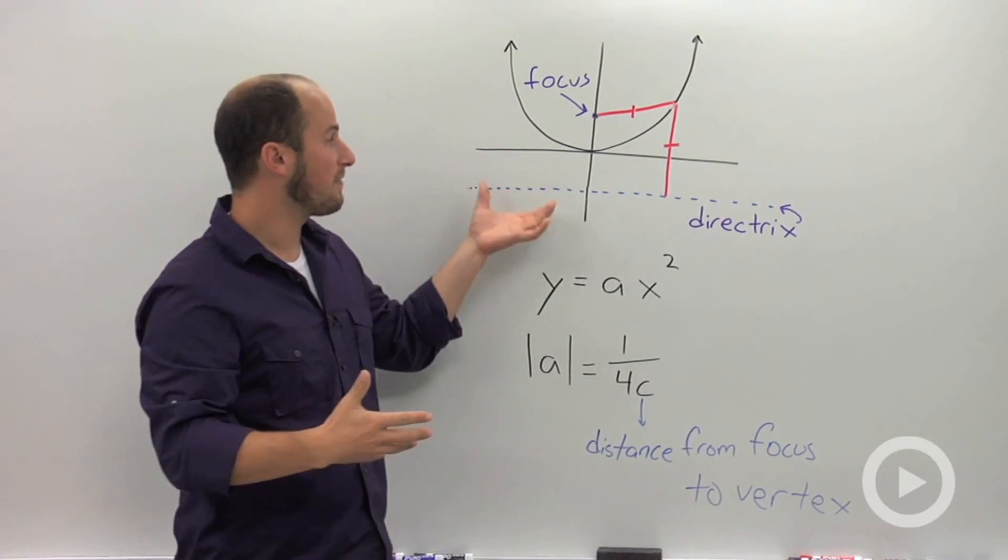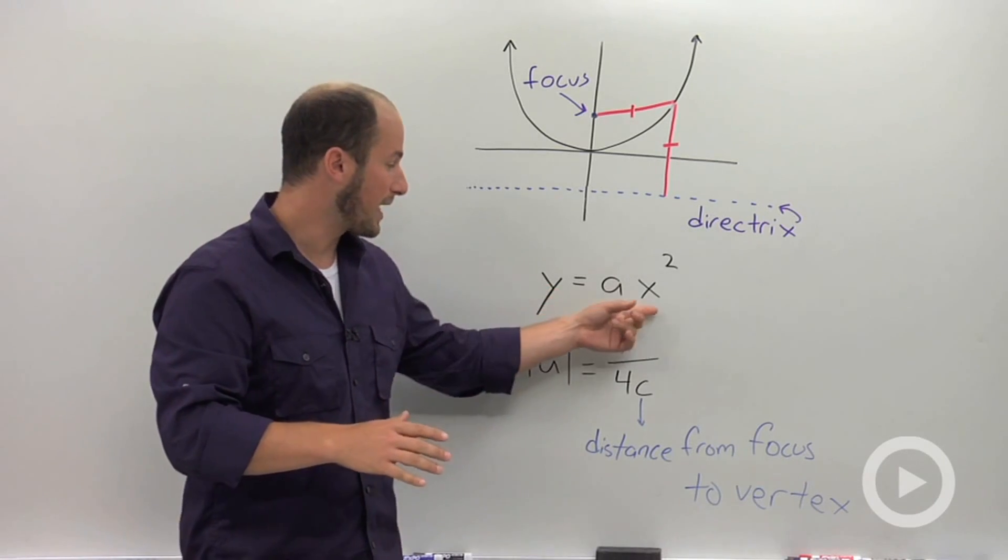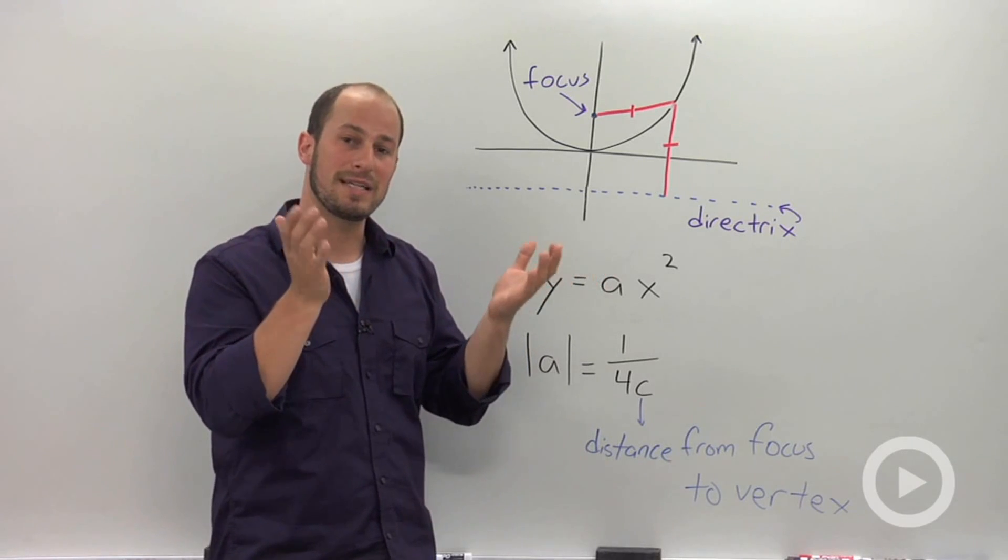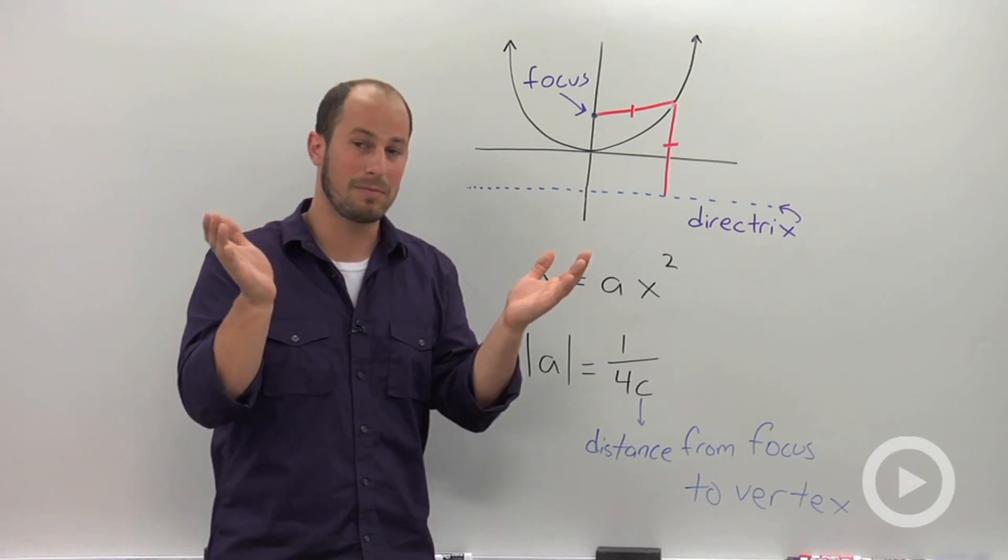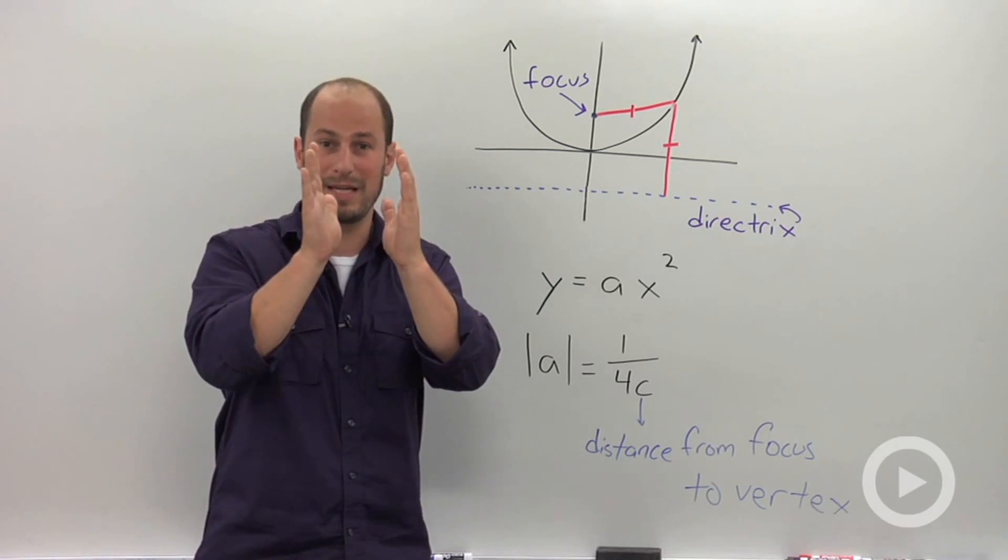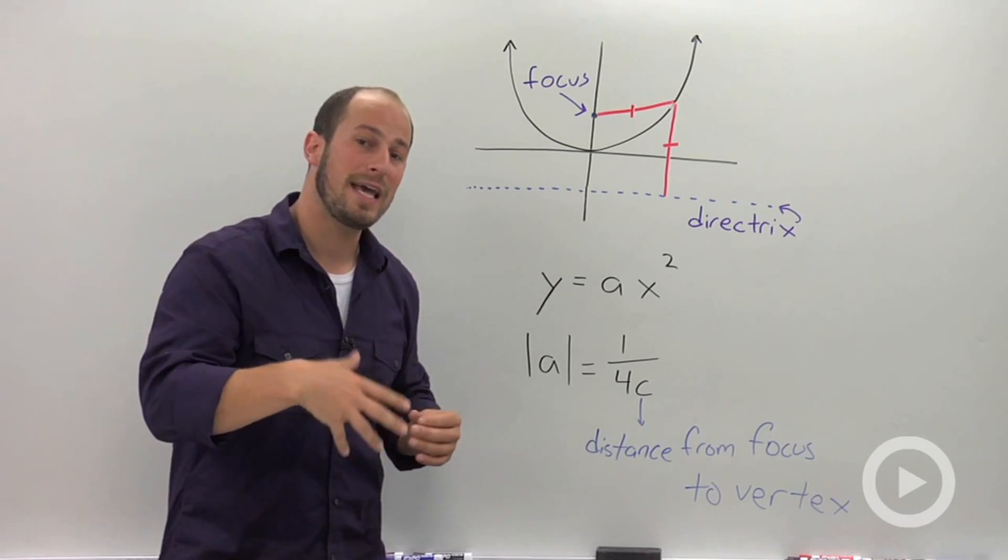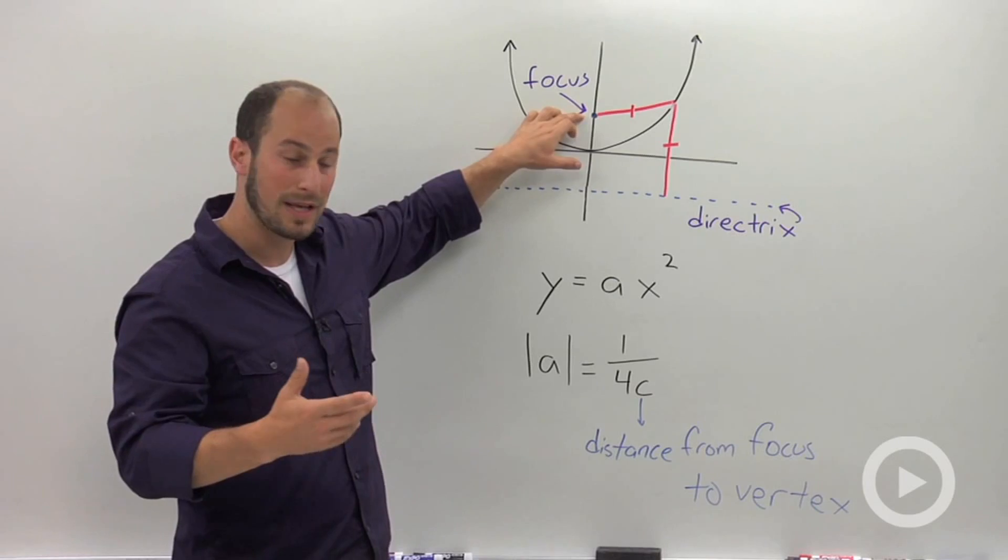So this parabola that I have up here is just a basic parabola, y = ax squared, where a is positive because we have an upward-facing parabola. What we're used to seeing is a dictating the steepness of this. If a is a number greater than 1, it becomes steeper. a is less than 1, it becomes wider. But actually, a is a direct relationship to this focus.